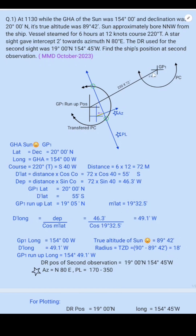GP1 latitude is 20°00'N, minus D'lat of 55' South, giving GP1 run-up latitude as 19°05'N. The mean latitude is 19°32.5'. D'long equals departure ÷ cos(mean lat) = 46.3 ÷ cos(19°32.5') = 49.1' West. GP1 longitude is 154°00'W plus D'long 49.1' West, giving GP1 run-up longitude as 154°49.1'W.